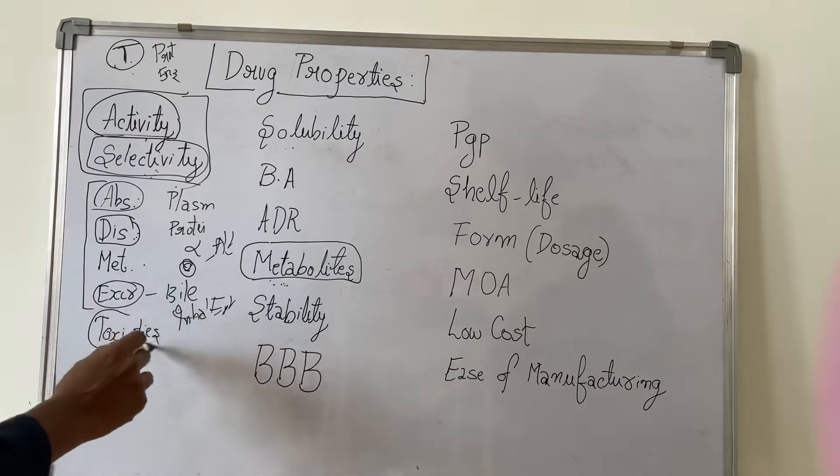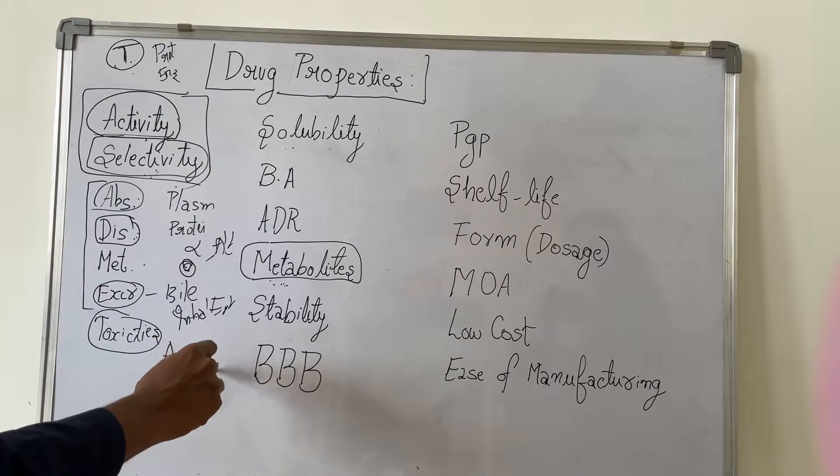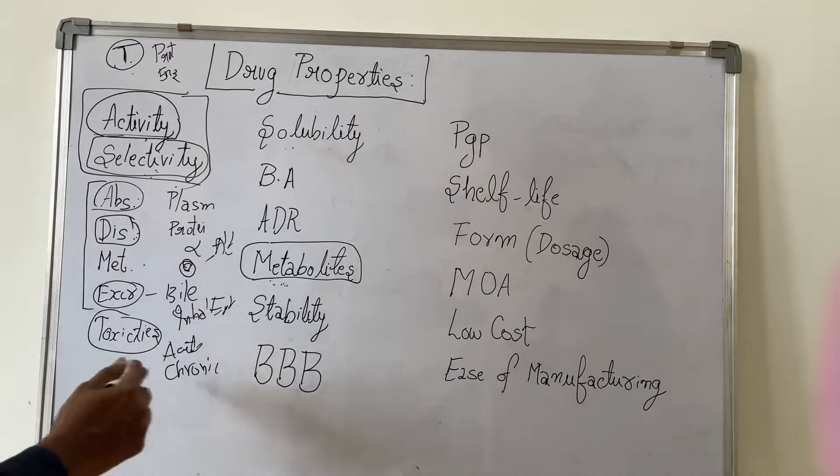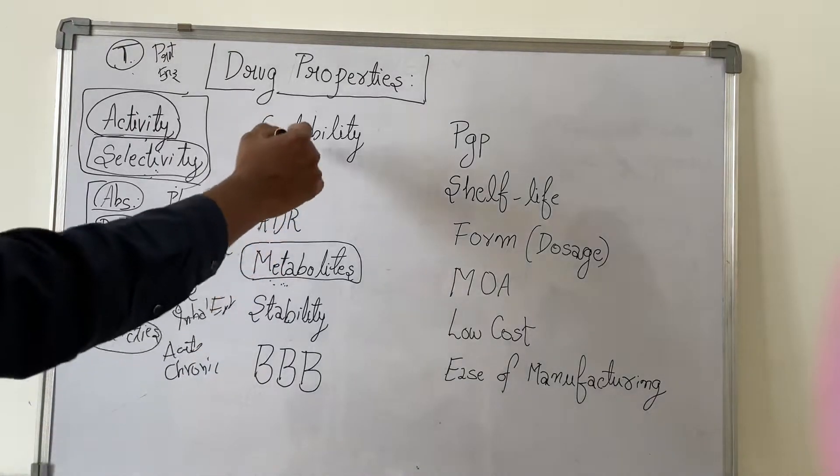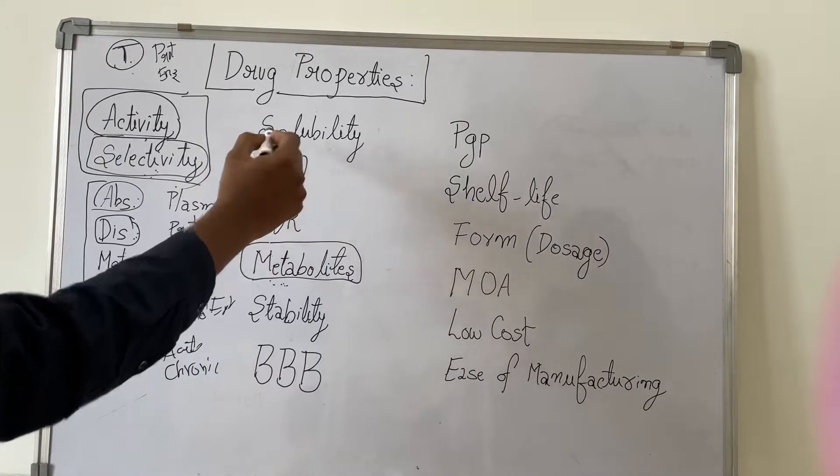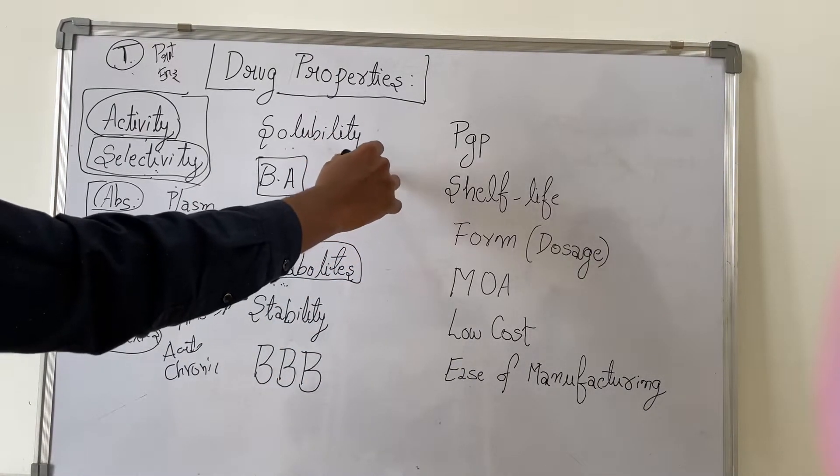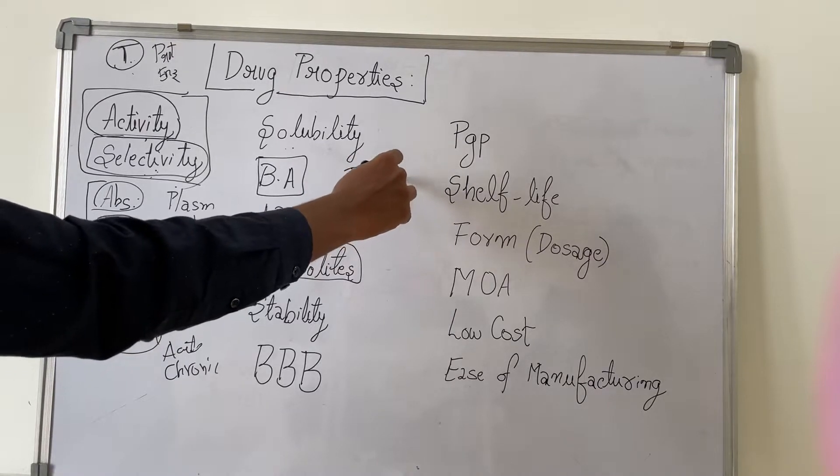Next one is toxicity. We will assess acute and chronic toxicity studies both in animal models and human models. Acute are usually less than six months or three months, whereas chronic are greater than six months. Next comes bioavailability. How much drug is available?